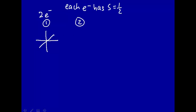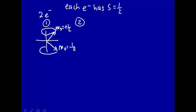Electron one has S equal one half, and this S can be oriented in two different ways. S can be oriented up, corresponding to M sub S equal plus one half, or oriented down, M sub S equal minus one half. In three dimensions, these form cones. We have the same picture for electron two with spin one half: it can point up or down. Since the spins are quantized in space, we have to sum them as vectors.